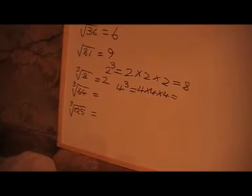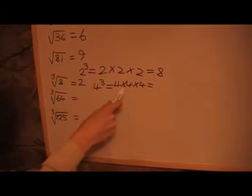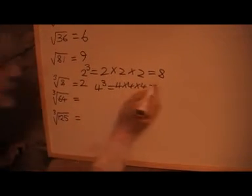So I want to find a number again that when I times it by itself 3 times, I get 64. Now if I times 4 by 4, I get 16. If I times 16 by 4, I get 64.